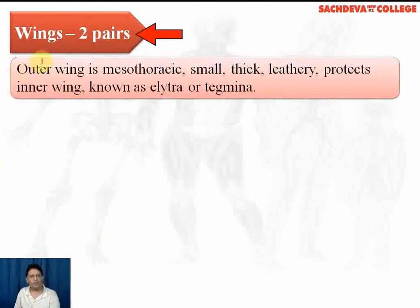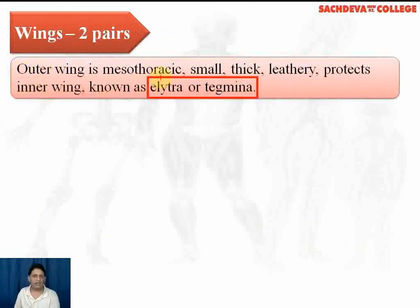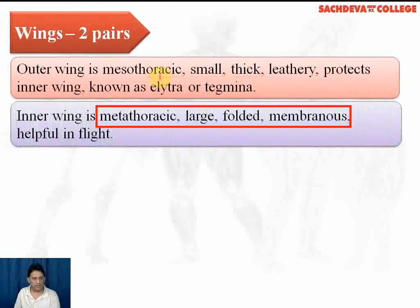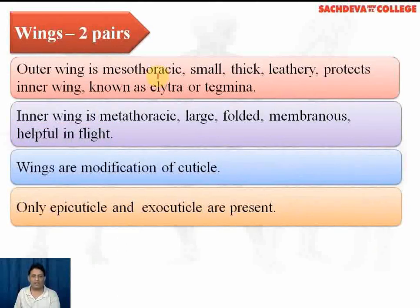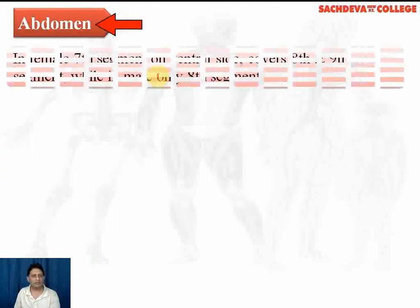There are two pairs of wings in cockroach. The outer pair is mesothoracic — small, thick, and leathery — and protects the inner wing; these are known as elytra or tegmina. The inner wing is metathoracic, large, folded, membranous, and helps in flight. Wings are modifications of the cuticle; in wings, only the epicuticle and exocuticle are present.